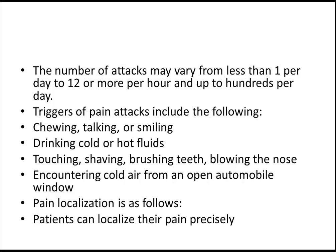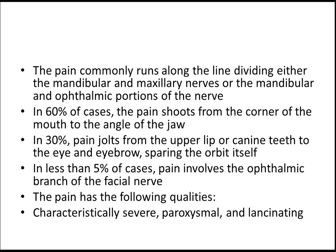The pain localization — patients can localize their pain precisely. The pain commonly runs along the line dividing either the mandibular and maxillary nerves or the mandibular and ophthalmic portion of the nerve. In 60% of cases, the pain shoots from the corner of the mouth to the angle of the jaw. In the remaining 30% of patients, the pain runs from the upper lip or canine teeth to the eye and eyebrows, sparing the orbit itself. When there is pain in the jaw, another differential diagnosis can be myocardial infarction, so you need to differentiate this disease from myocardial infarction. In less than 5% of cases, pain involves the ophthalmic branch of the trigeminal nerve. Look at the qualities, because the qualities will differentiate trigeminal neuralgia from myocardial infarction.